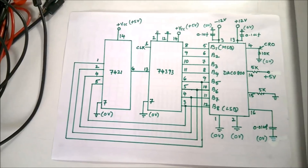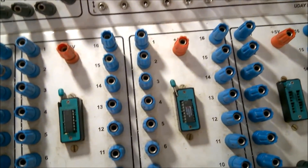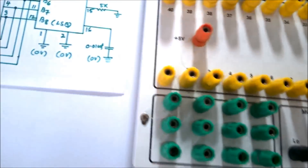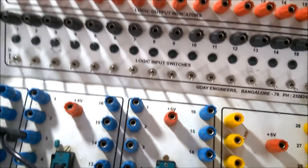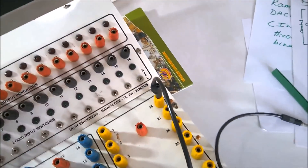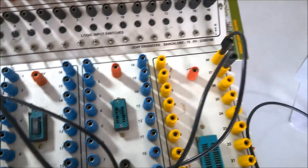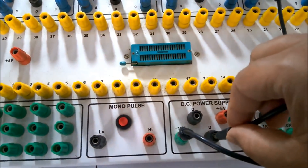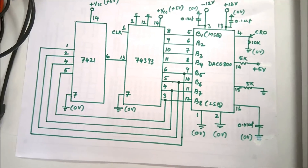As per the diagram, pin number 3 of the DAC should be connected to minus 12 volts. I am connecting pin 3 to the minus 12 volt supply. Pin 3 is also connected to one end of a capacitor, and the other end of that capacitor is connected to ground.